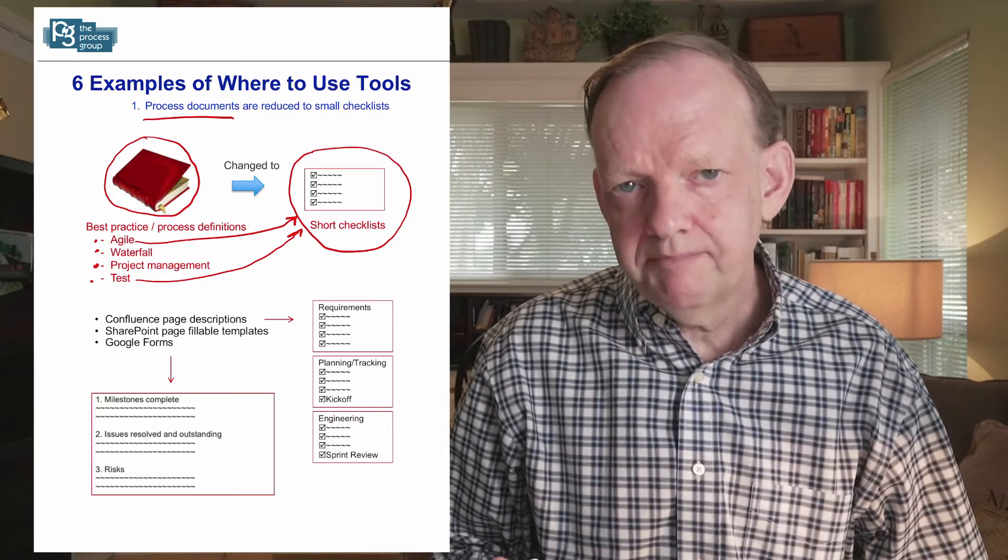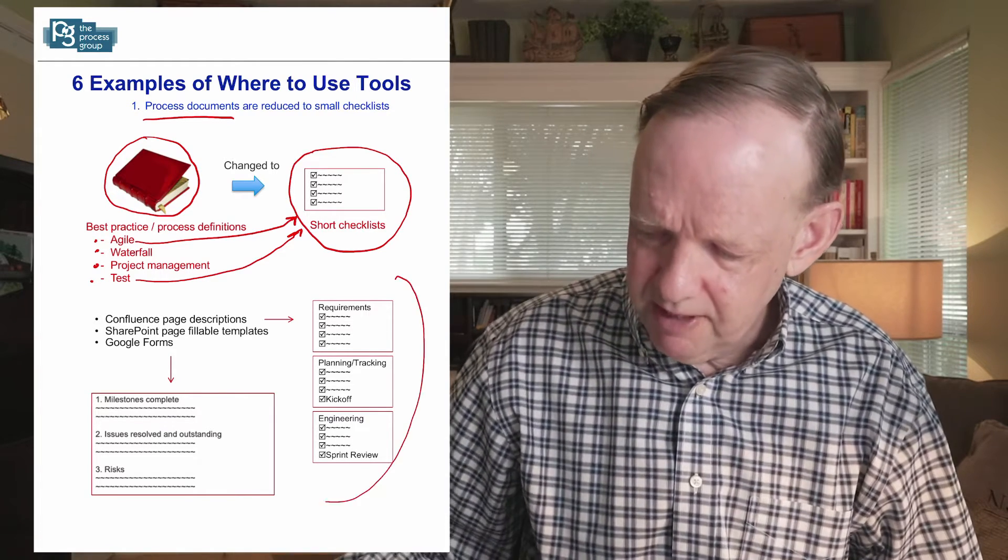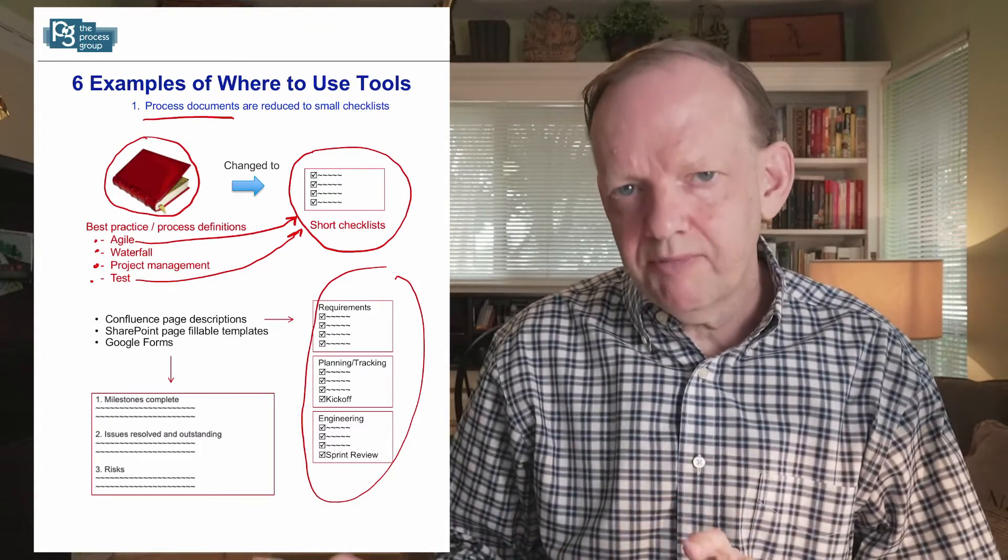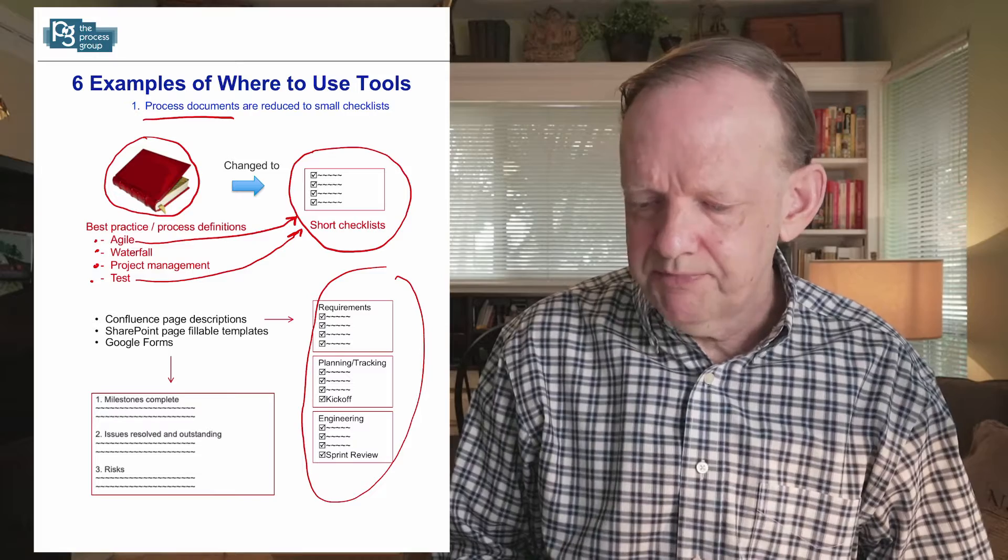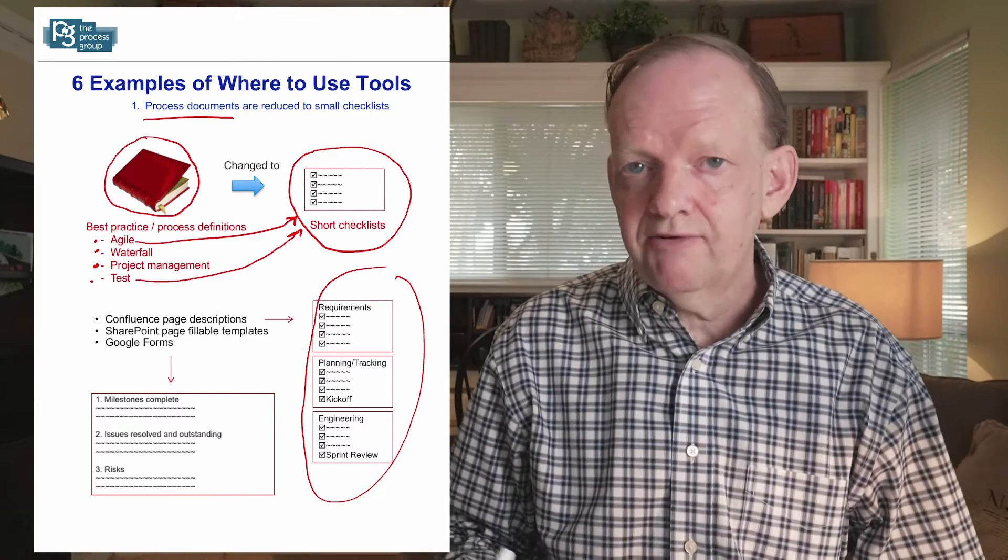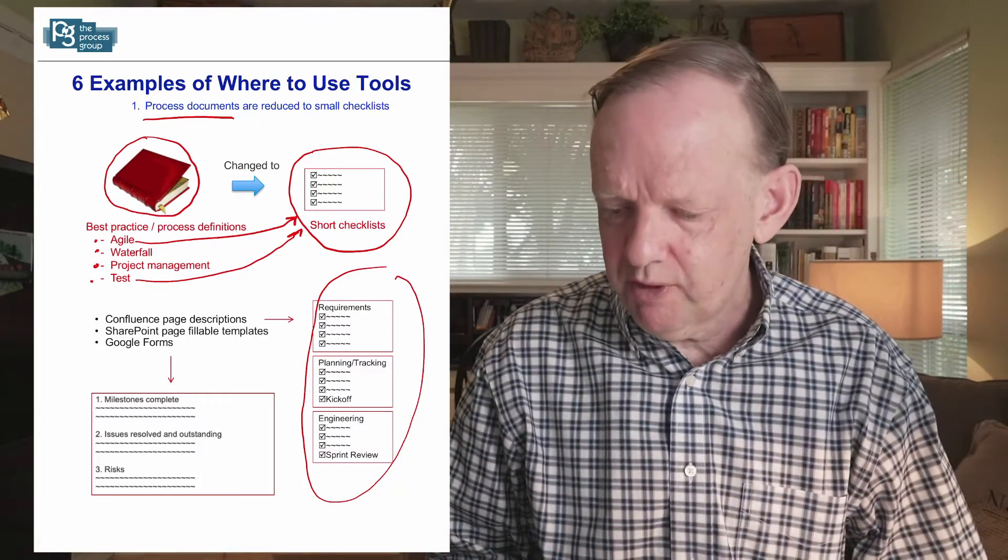Now those checklists can be put into a Confluence page or a Wiki page. The checklist can be utilized or referred to very quickly as the developer or team member works. They don't have to go to a separate large document. They can click on the link and find how to do requirements, backlog, or testing very quickly.